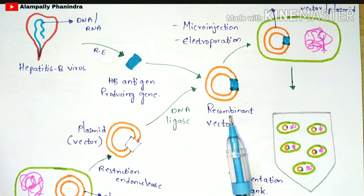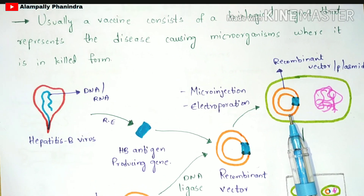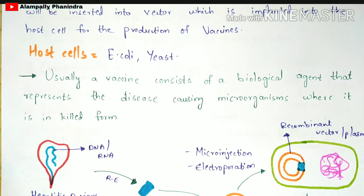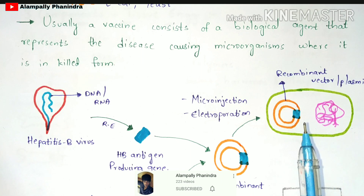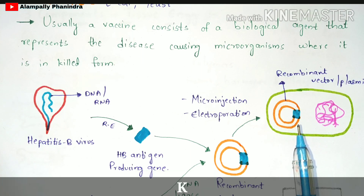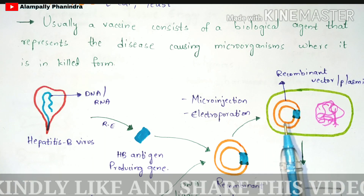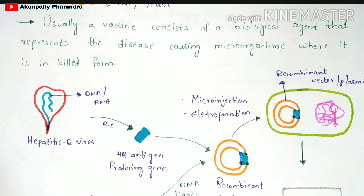The HB antigen producing gene has been attached to the plasmid vector. Now that vector is called a recombinant vector, because we have recombined the HB antigen producing gene with the plasmid. Now take a host cell — either E. coli or a yeast cell. Yeast cells are the most highly used host cells for vaccine production, so here we take a yeast cell. Make sure the yeast cell chosen does not contain any plasmid DNA.